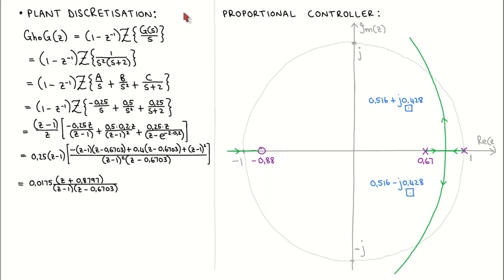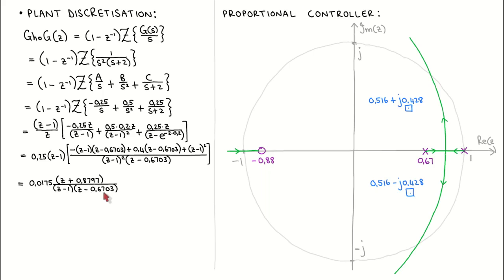The next step is to discretize the plant model. The discrete equivalent plant model is calculated as 1 minus e to the power minus 1, times the z-transform of G(s) divided by s. After substituting the plant transfer function, performing partial fraction expansion, calculating the residues, applying the s and z-transform tables, and manipulating the results into standard transfer function format, we arrive at a discrete time transfer function with a gain of 0.0175, a zero at z equal to minus 0.8797, and two poles: one at z equal to 1 and the other at z equal to 0.6703.